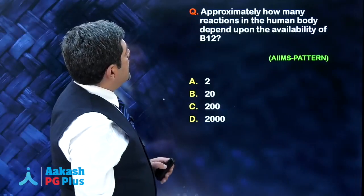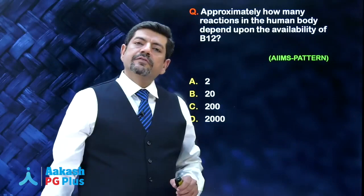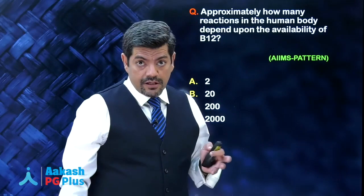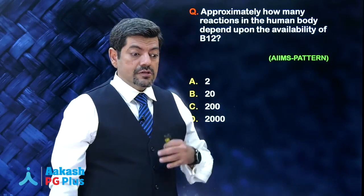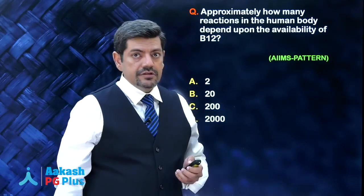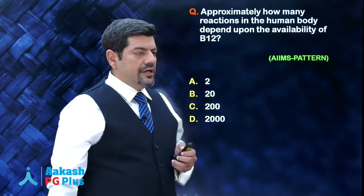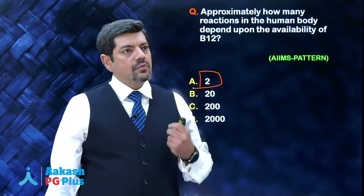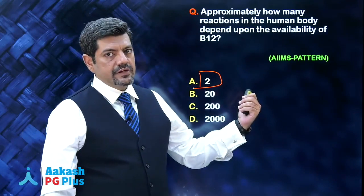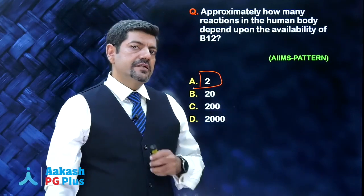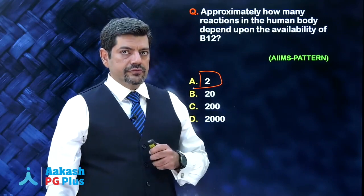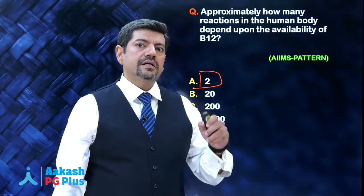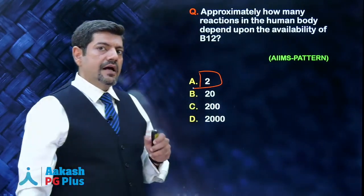Moving on — approximately how many reactions in the human body depend upon the availability of B12? Despite causing pancytopenia and subacute combined degeneration, only two reactions depend on B12. One is the homocysteine to methionine conversion. The other is methylmalonyl-CoA isomerization — which is why in B12 deficiency, patients will develop methylmalonic acidemia and methylmalonic aciduria.